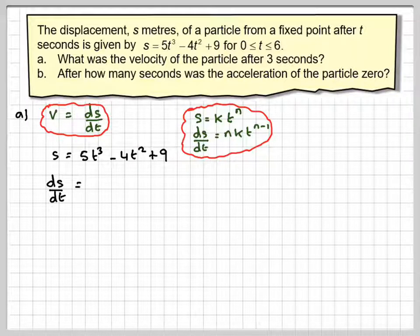Finding ds dt means bringing the 3 down in front, so it's 3 times 5, which is 15t. Reduce the power by 1, it becomes 15t squared. Same here, bringing the 2 down in front, minus 2 times 4 gives me 8t, and if you reduce the power by 1, 2 minus 1 gives me t to the 1, which we don't write in. And if you differentiate a number, you get nothing.